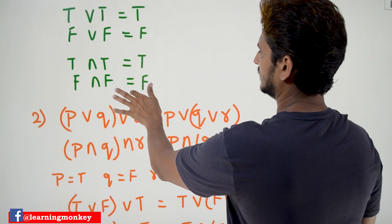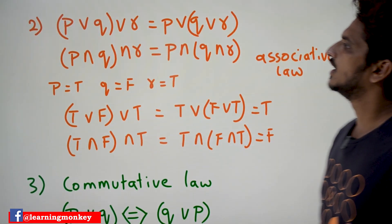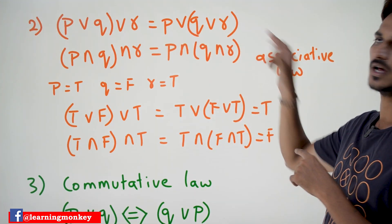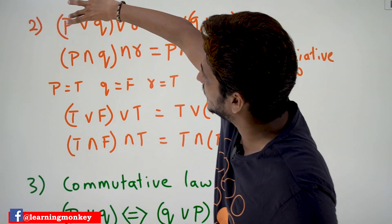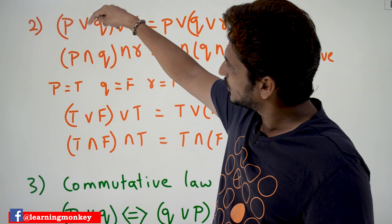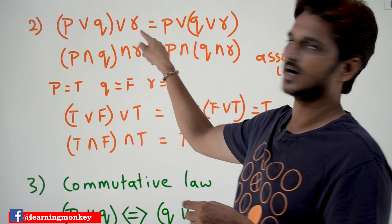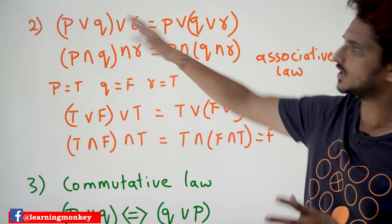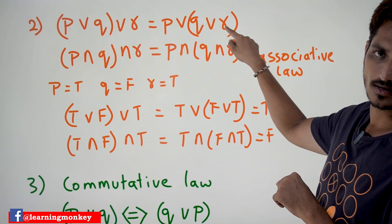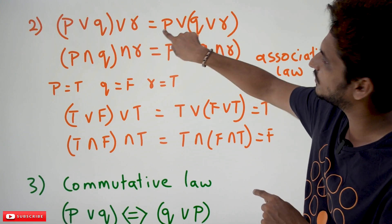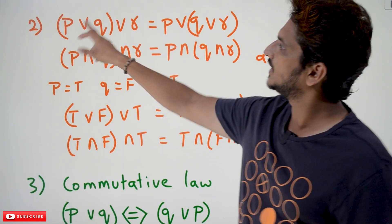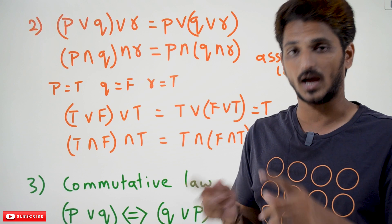The second one is the associative law. P disjunction Q disjunction R is equal to P disjunction Q disjunction R. Whenever there are brackets, we do that operation first — P disjunction Q is done first, then disjunction R. The same output will result from either grouping. You can shift the brackets any way — you can place them anywhere among P disjunction Q disjunction R and the entire output will be the same.